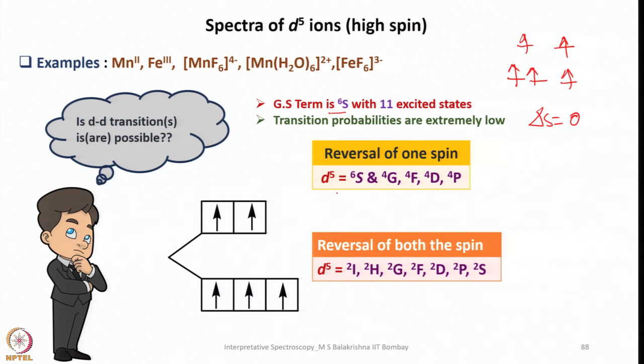Here, to see transition from d5 system, from 6S to 4G, 4F, 4D, 4P, involves the reversal of one spin. If I promote one electron, it's basically reversal of one spin essential to see the transition. On the other hand, to see transition to these 7 levels, we need to reverse the spin of both electrons, which is doubly spin forbidden.